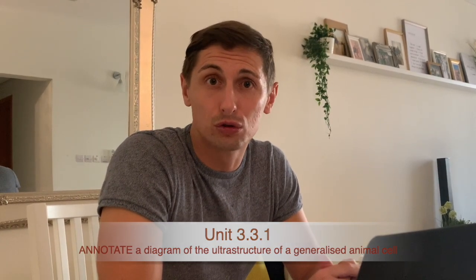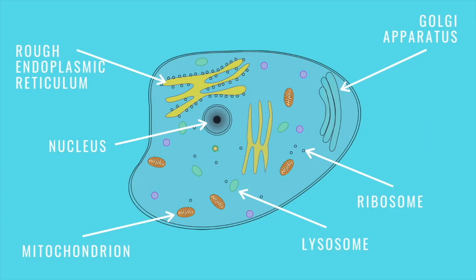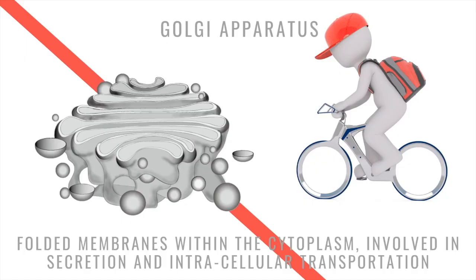Firstly, we need to be able to annotate a diagram of the ultrastructure of a generalized animal cell. You probably have some understanding of eukaryotic and prokaryotic cells from GCSE biology — an animal cell is a eukaryotic cell. I'm going to take you through the six different organelles you need to know. The Golgi apparatus consists of folded membranes within the cytoplasm involved in secretion and intracellular transportation. On the diagram it will likely appear right next to the membrane, because it's responsible for sending proteins and compounds out of the cell.